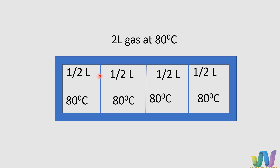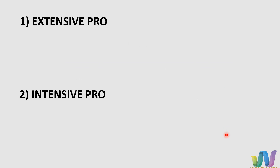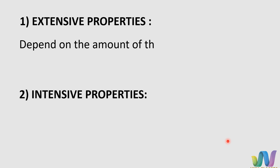Volume is an extensive property. But what about temperature? Temperature does not depend on the amount of substance. So properties are divided into extensive properties and intensive properties. Extensive properties depend on the amount of the substance that is taken.